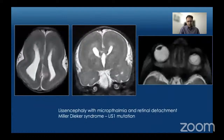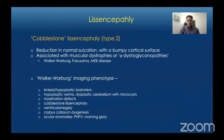This is another example of lissencephaly with associated microphthalmia and retinal detachment — this constellation is called Miller-Dieker syndrome, associated with LIS1 mutation. Another variant, sometimes called lissencephaly type 2, is cobblestone lissencephaly: reduced sulcation with a bumpy cortical surface. It is commonly associated with muscular dystrophy syndromes called alpha-dystroglycanopathies, including Walker-Warburg, Fukuyama, and Muscle-Eye-Brain disease. On imaging we may not distinguish individual subtypes, so we use the term Walker-Warburg imaging phenotype when all findings are present.